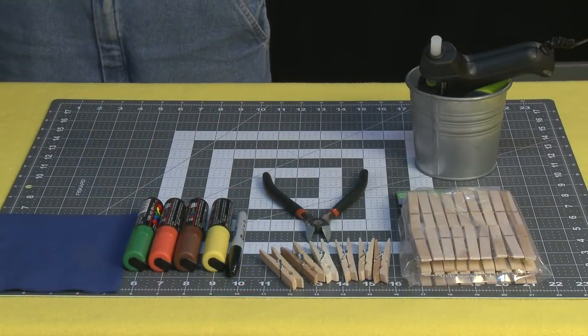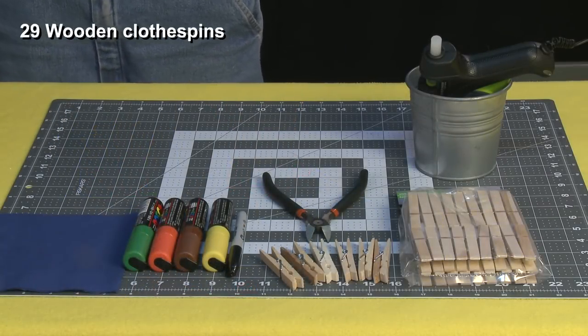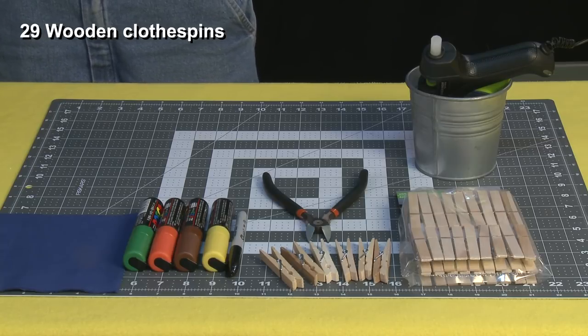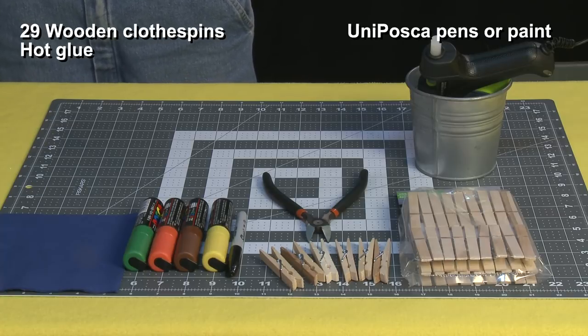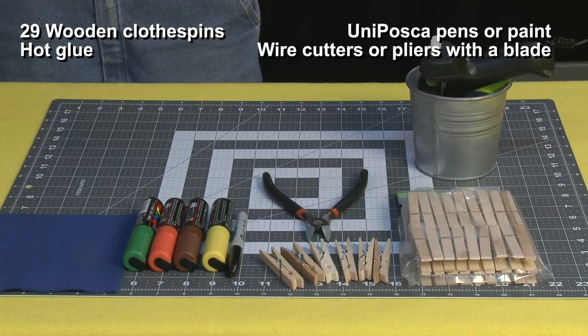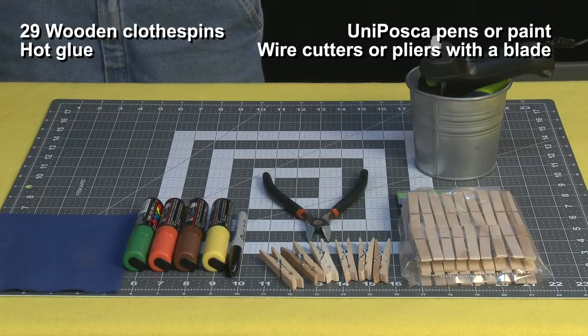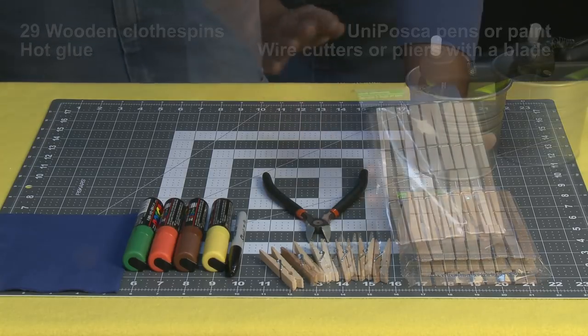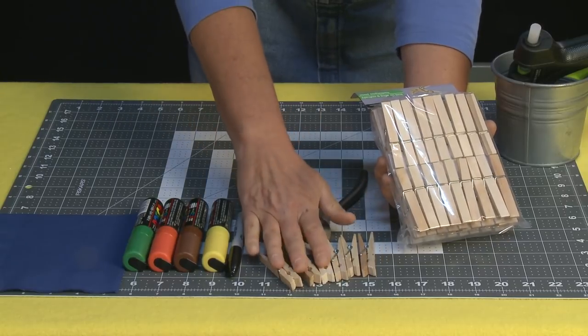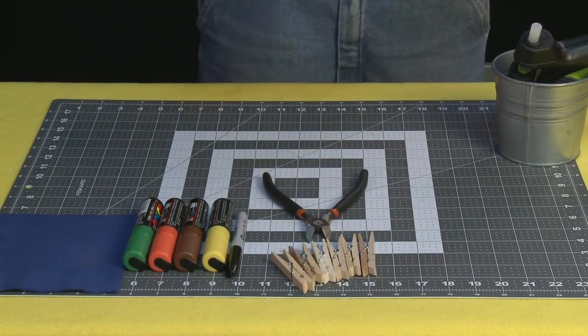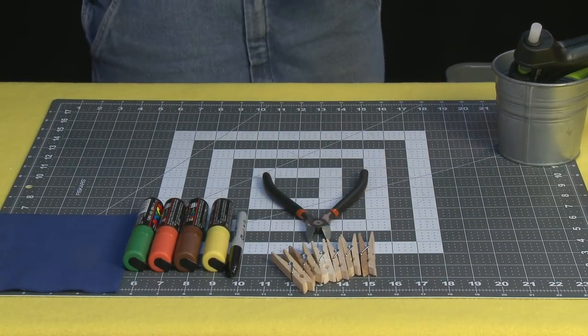For this project you'll need 29 wooden clothespins, hot glue, Uni Posca pens or paint, flower shears, wire cutters, or needle nose pliers with a blade. I got these at Dollar Tree. It's 36 of these clothespins for a buck which is great and that's really all you need.